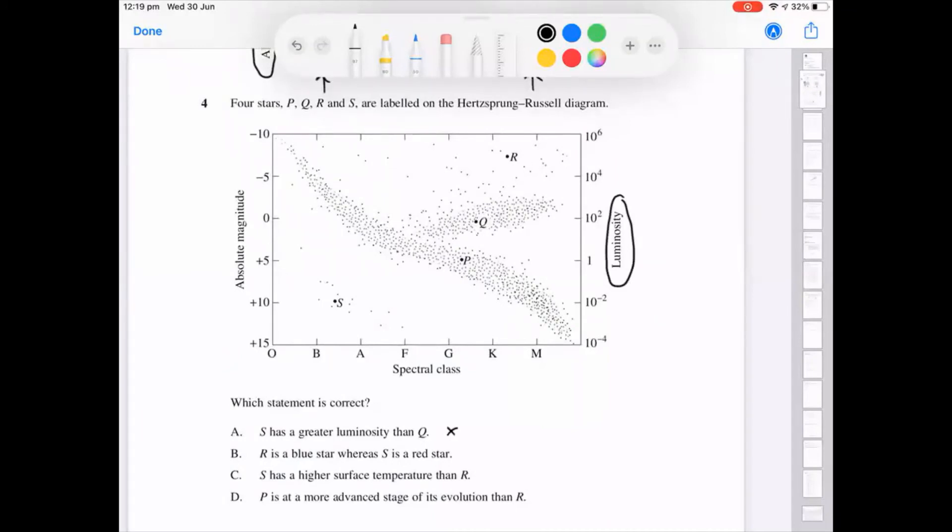R isn't a blue star. It's a supergiant because it's up here. And then S is a red star. No, S is a white dwarf because it's down here. So we know that one's out. S has a higher surface temperature than R.